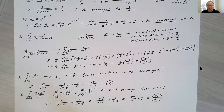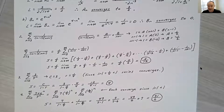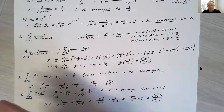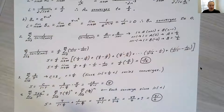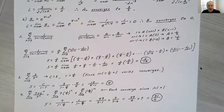The next two problems are geometric series. The geometric series test says they converge when the absolute value of the common ratio R is less than 1 — each term gets smaller. If R equals 1 or is greater than 1, the series diverges because you're adding numbers that never get smaller.